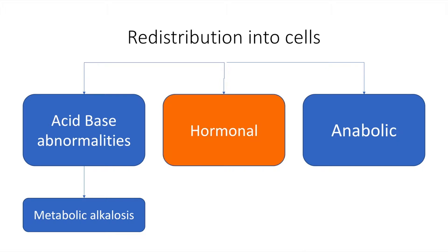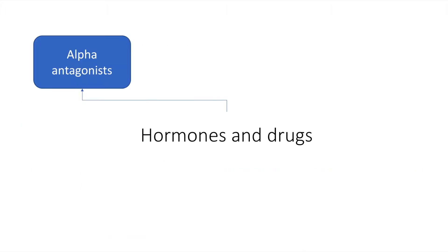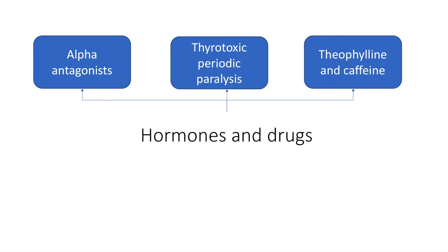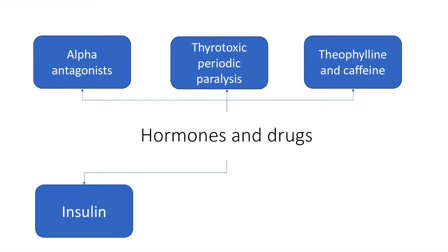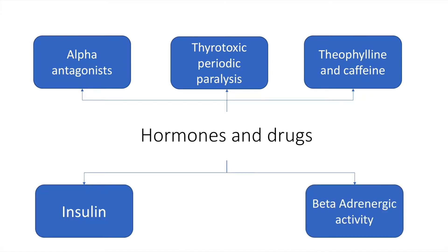Hormones and drugs which cause hypokalemia include alpha antagonists, thyrotoxic periodic paralysis, theophylline, and caffeine. Theophylline is most commonly used in chronic obstructive pulmonary disease, but its use is now being questioned because of its adverse effect on the heart. Insulin and increased beta-adrenergic activity can both cause hypokalemia.